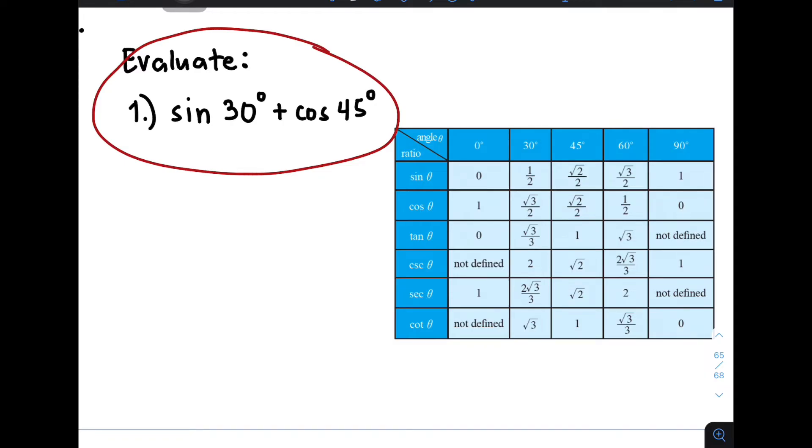When you encounter this kind of problem, it says here evaluate, meaning we are asked to find a specific value for this given expression in which the given is sine 30 degrees plus cosine 45 degrees. Do not worry guys, this is not that complicated as long as you already know or you memorized already the exact value of the 6 trigonometric ratios of special angles.